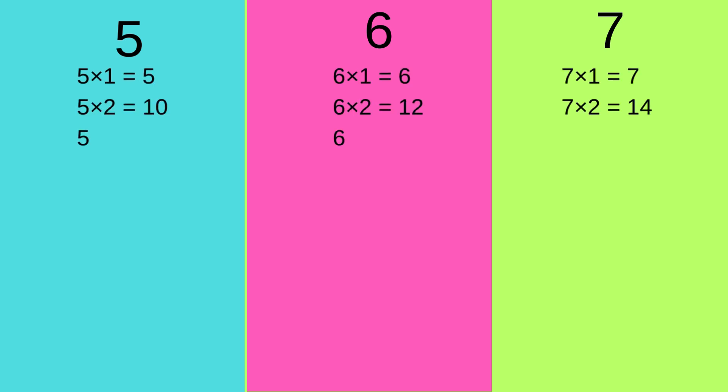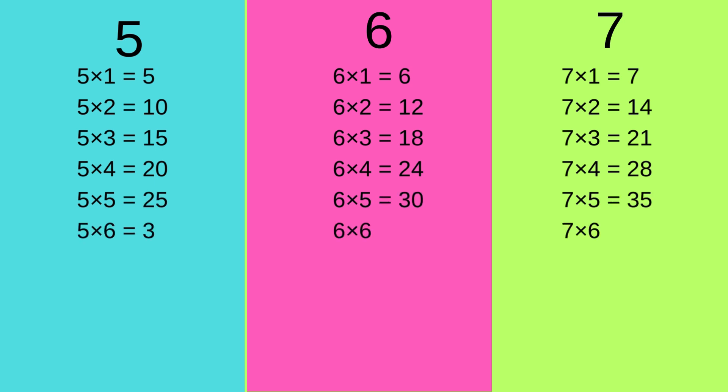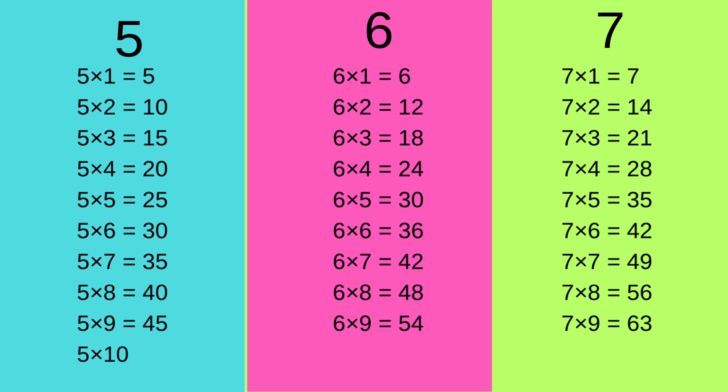5 1's are 5, 5 2's are 10, 5 3's are 15, 5 4's are 20, 5 5's are 25, 5 6's are 30, 5 7's are 35, 5 8's are 40, 5 9's are 45 and 5 10's are 50. Awesome!